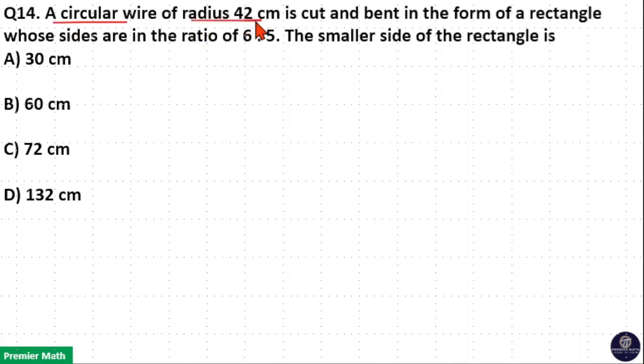A circular wire of radius 42 centimeters is cut and bent into the form of a rectangle whose sides are in the ratio 6 is to 5. The smaller side of the rectangle is...